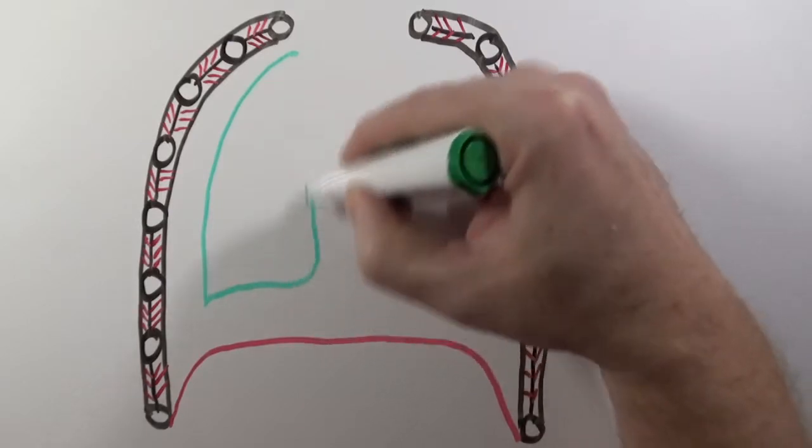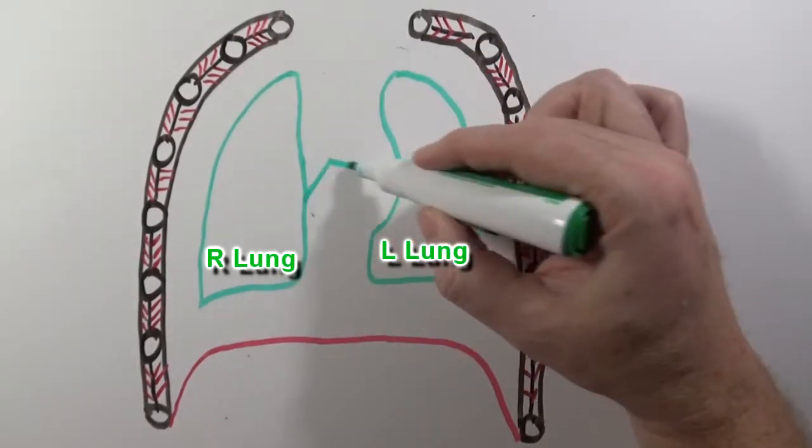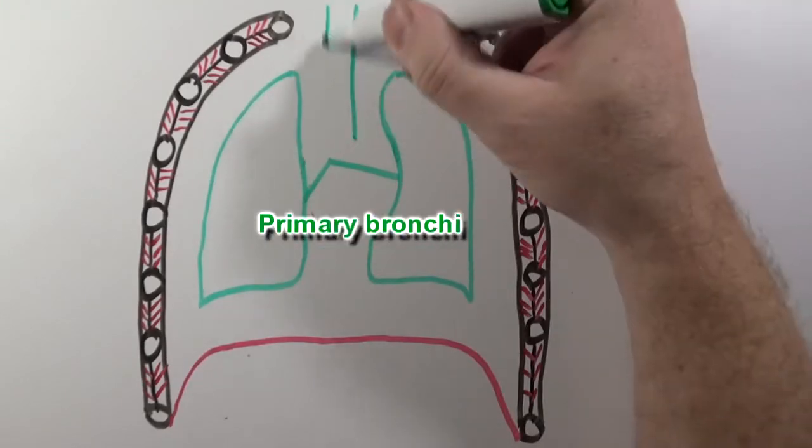Now these green things I'm drawing here are the lungs. Note the cardiac notch in the left lung. Here are the primary bronchi and the trachea.